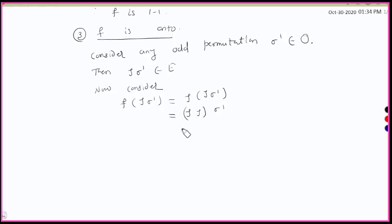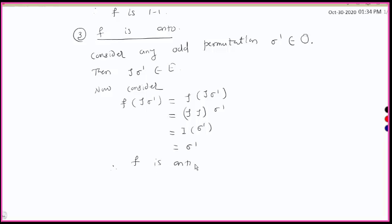Since τ is a transposition, τ·τ is the identity permutation I. So f(τσ') = I·σ' = σ'. Therefore, for any odd permutation σ' belonging to O, there exists τσ', an even permutation belonging to E, such that f(τσ') = σ'. Thus f is onto.